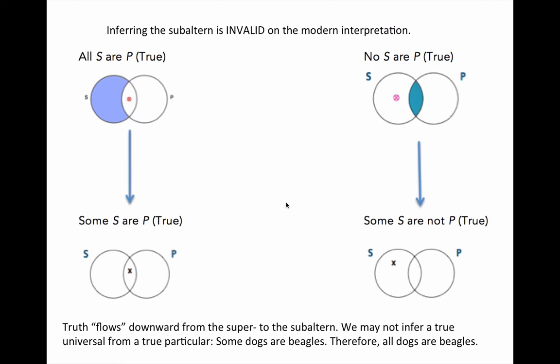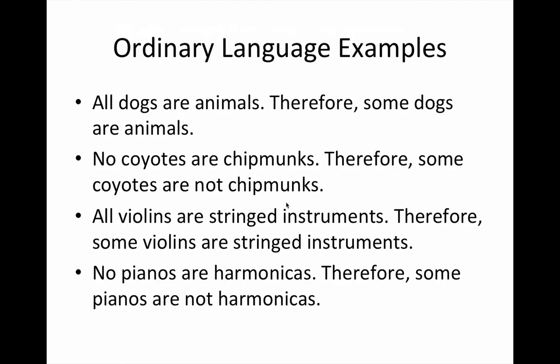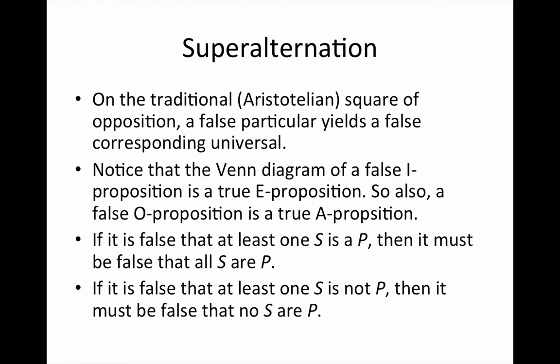In addition, as a reminder, the elements of the square of opposition covered in this video are not inferences we can make on the modern interpretation of the universal, because the modern interpretation does not assume existential import. Here are some ordinary language examples — notice that when the universal is true, the particular of corresponding quality is also true. Next, we want to know what we can infer from a particular to a corresponding universal. This inference is called superalternation — inferring from a particular its corresponding universal — and it is valid only on the traditional or Aristotelian interpretation.